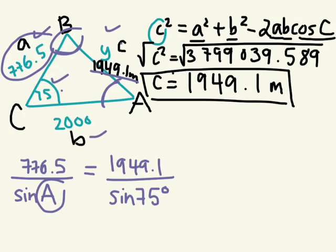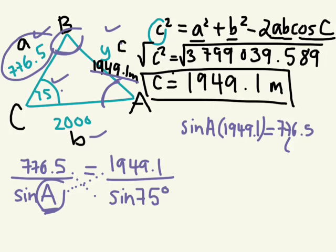So cross multiply, and we're finding an angle here. Okay. So to cross multiply, can I multiply this? It's unknown. Can I multiply it by something that's known? I don't know what a is, so I'm going to leave it as sine a times 1949.1 equals, can we multiply these two things together? Okay. So it's going to be 776.5 times sine 75. Okay. We're multiplying these two together.